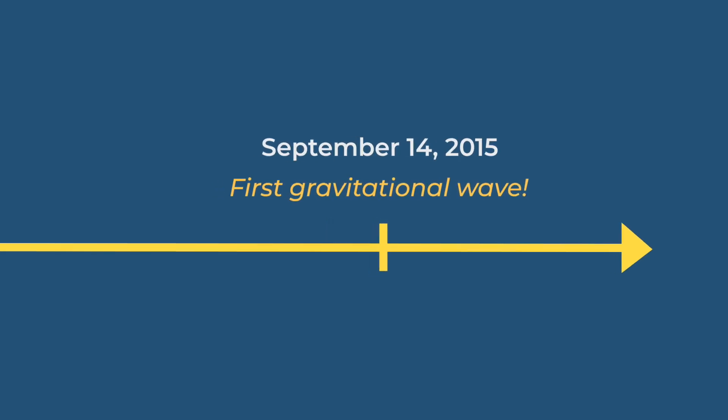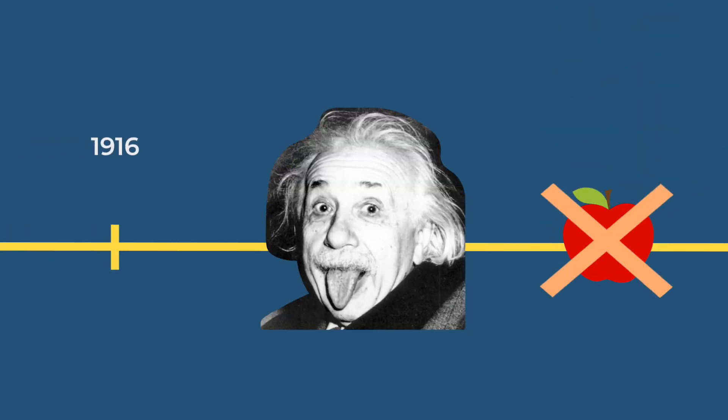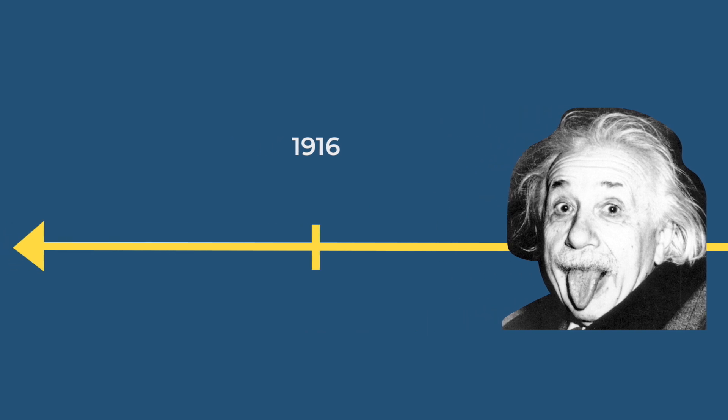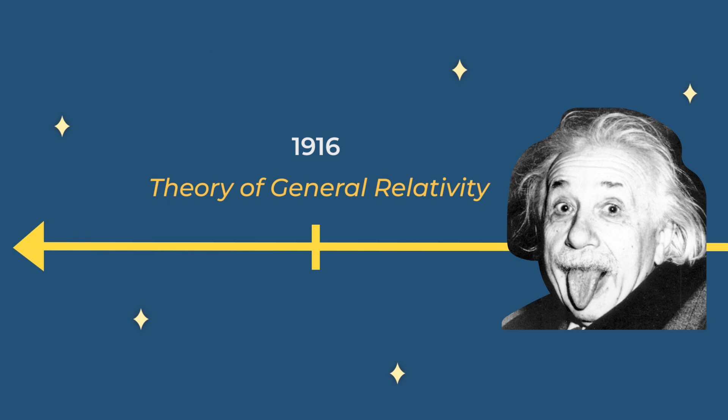Almost 100 years before the first detection of the gravitational wave, Albert Einstein completely ignored Isaac Newton's theory of gravity. Instead, Einstein developed his theory of general relativity, explaining two key points essential for astrophysics: gravity is all about geometry, and mass in space causes depression in spacetime.